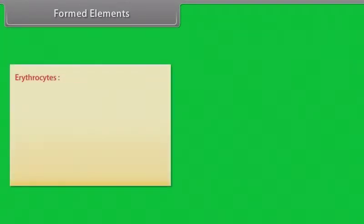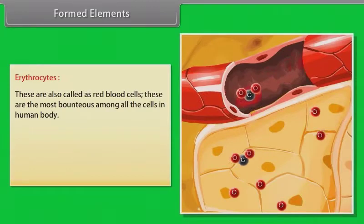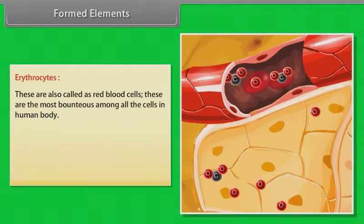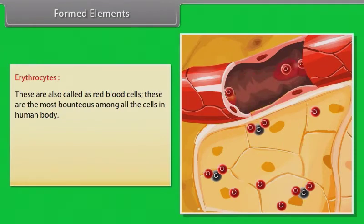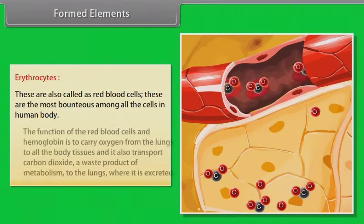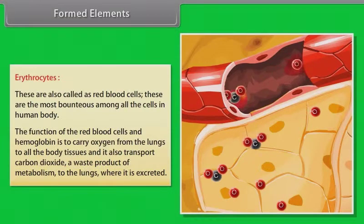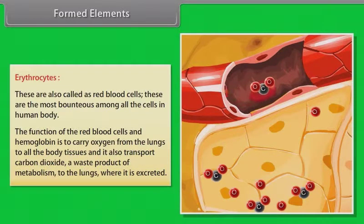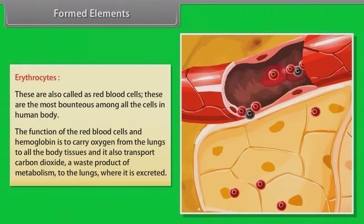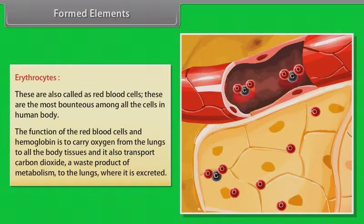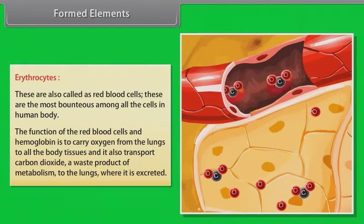Erythrocytes, also called red blood cells, are the most abundant cells in the human body. Their function is to carry oxygen from the lungs to all body tissues and to transport carbon dioxide — a waste product of metabolism — back to the lungs where it is excreted.